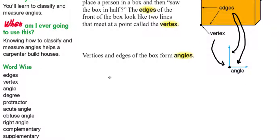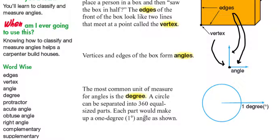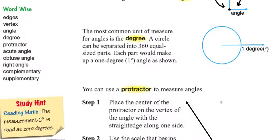The most common unit of measure for angles is what we call the degree. A circle can be separated into 360 equal-sized parts. Each part would make up one degree — so this is one degree, and there are 360 of them in a circle, 360 degrees. That's the definition of a degree.